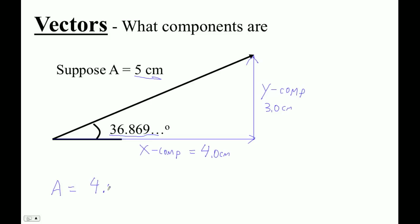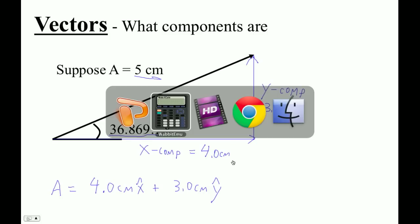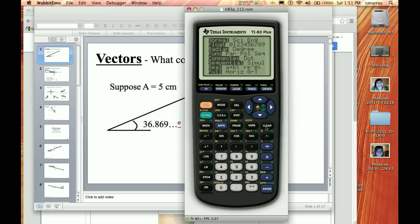We would write this vector this way: A is equal to 4.0 centimeters in the x direction, and this is how you write it in physics. Plus 3.0 centimeters in the y direction. You can also say 4 centimeters x hat plus 3 centimeters y hat if you want to be a nerd. Now, the next thing I'm going to do is we're going to use our calculator to find these. Somebody gives you this angle. I'll show you how to do that. But before we do that, we've got to make sure that our calculator is in radians, right?